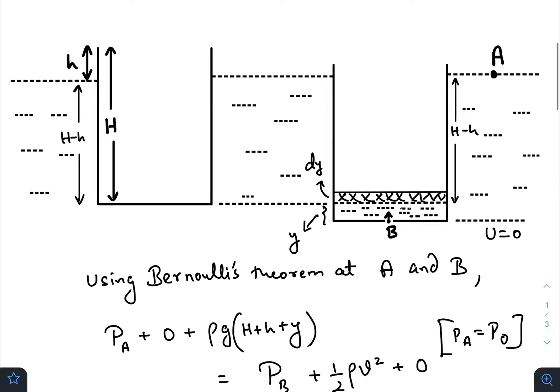Let us analyze the situation. I have already drawn the diagram. Initially, at t = 0, this is the container — some portion is inside the water and a height h is out of the water. At t = 0, a small hole is made in the bottom with cross-sectional area S.